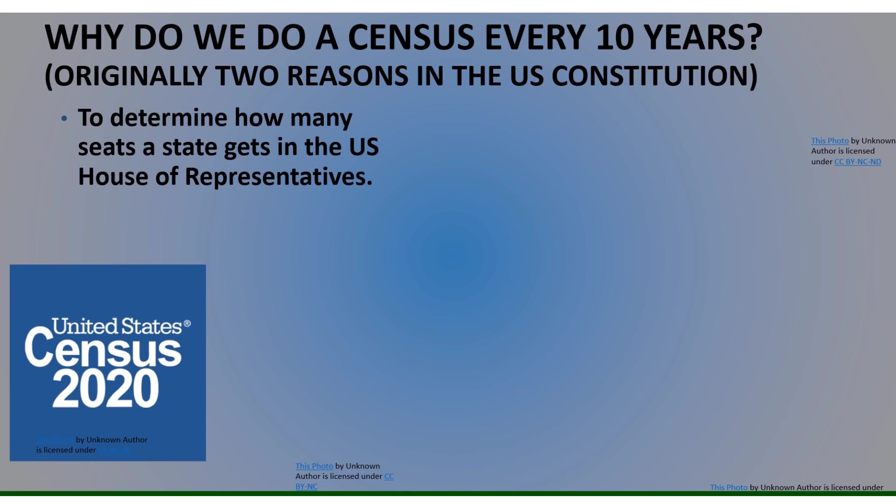The first constitutional reason why we do a census is we have to determine every 10 years how many members in the U.S. House of Representatives each state gets. You may remember the topic of the Virginia Plan versus the New Jersey Plan — whether there would be equality of states regarding power in the national government, or whether a state's power would be based on how many people are in that state. The census is part of a compromise. The Senate is about equality of states, but in the U.S. House, representation is based upon a state's population.